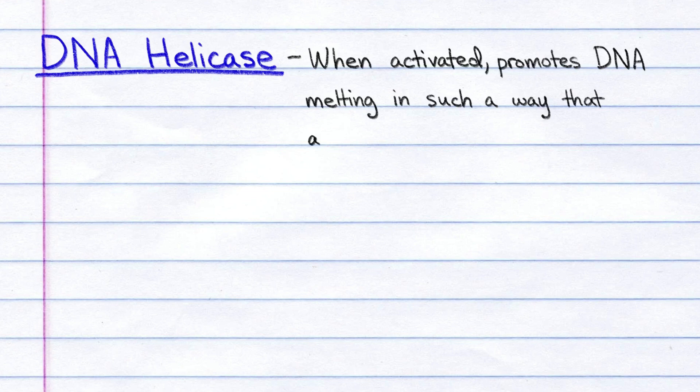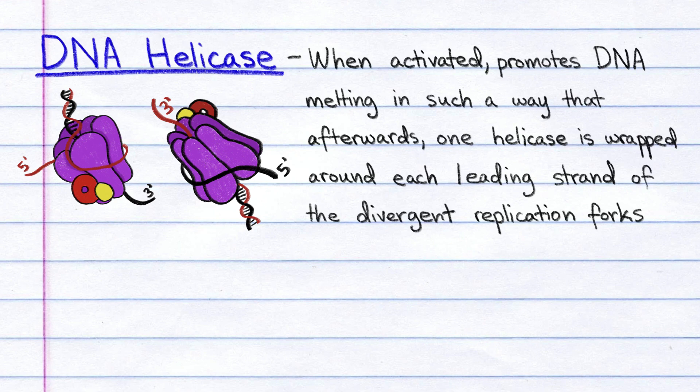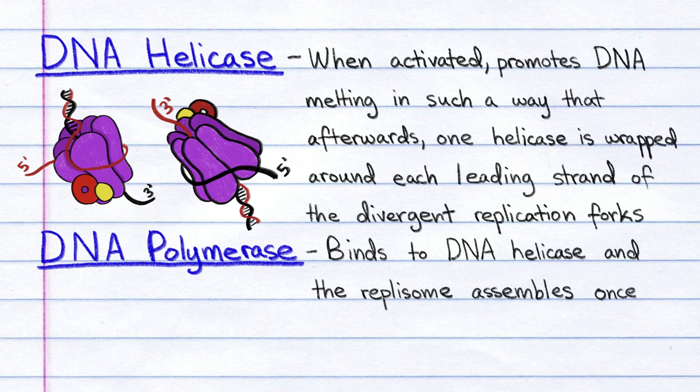Again, DNA helicase, when activated, promotes DNA melting in such a way that afterwards, one helicase is wrapped around each leading strand of the divergent replication forks. DNA polymerase binds to the DNA helicase, and the replisome assembles once the DNA strands separate.